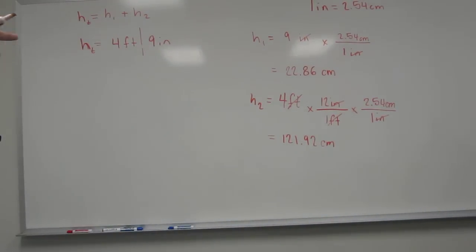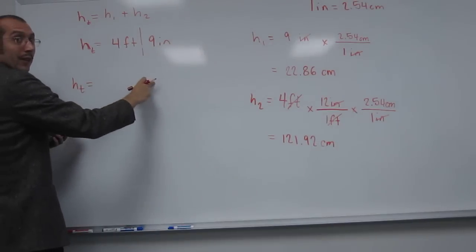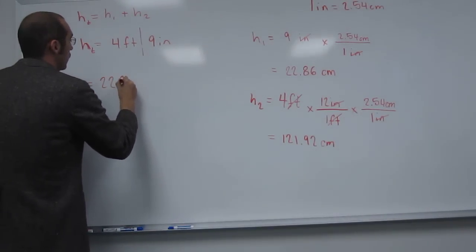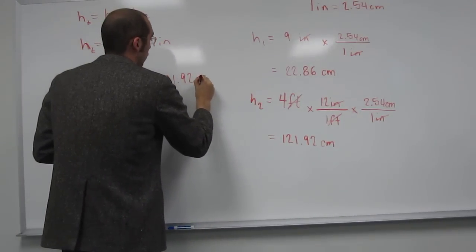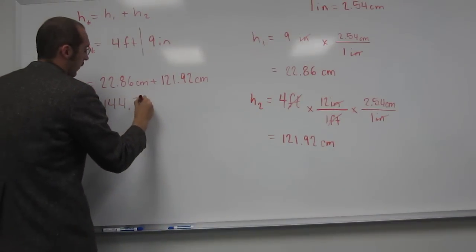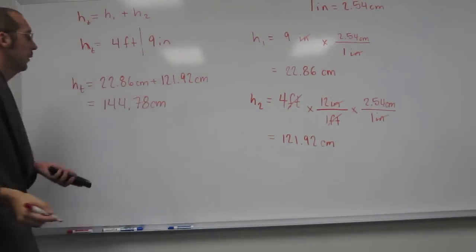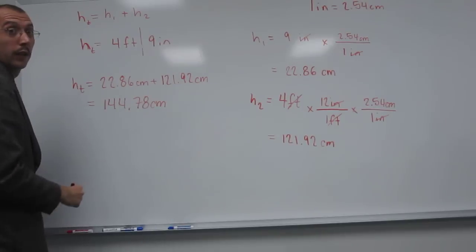Okay, so we've got this 121.92, then we add that to 22.86. And so, what are we doing? We're doing HT equals H1 plus H2, right? So 22.86 centimeters plus 121.92 centimeters. When we do that, 144.78 centimeters. And I'll bet you they want you to do this in three significant figures because the answer is D, which is in three significant figures, which is rounded here. 145.